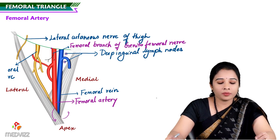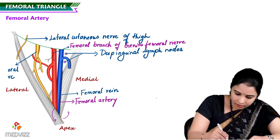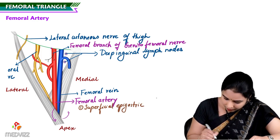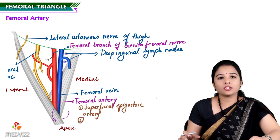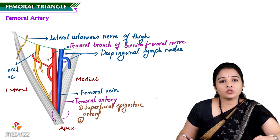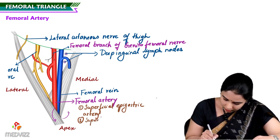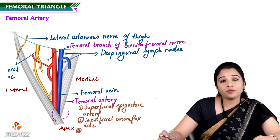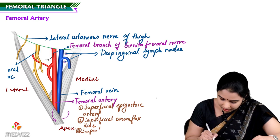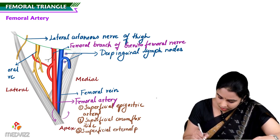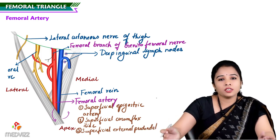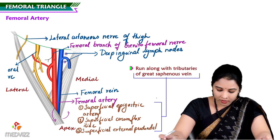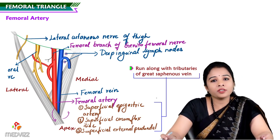The femoral artery gives three superficial branches: the superficial epigastric artery, the superficial circumflex iliac artery, and the superficial external pudendal artery. All are superficial branches. These three branches run along with the tributaries of the great saphenous vein, which are present within the superficial fascia.